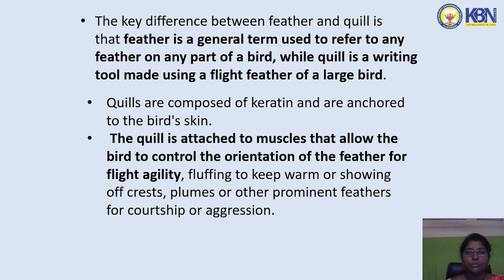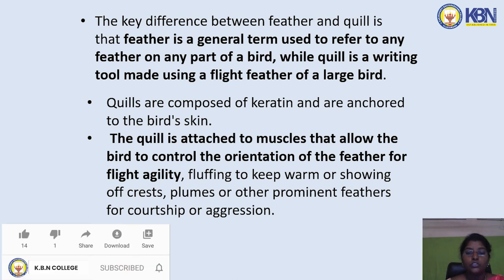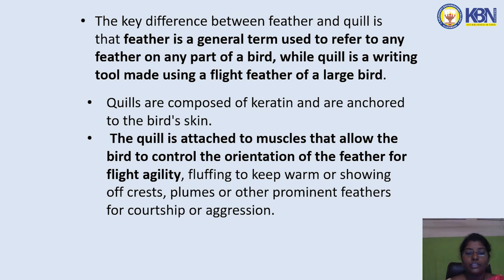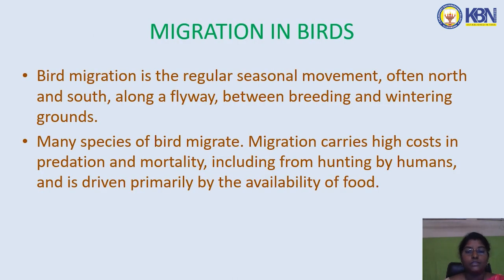The key difference between a feather and a quill is that feather is a general term referring to any feather or part of a bird, while a quill is a writing tool made using a flight feather of a large bird. Quills are composed of keratin and anchor to the bird's skin. The quill is attached to muscles that allow the bird to control feather orientation for flight agility, fluffing to keep warm, or displaying crest plumes for courtship and aggression. Bird migration is the regular seasonal movement north and south along flyways between breeding and wintering grounds.